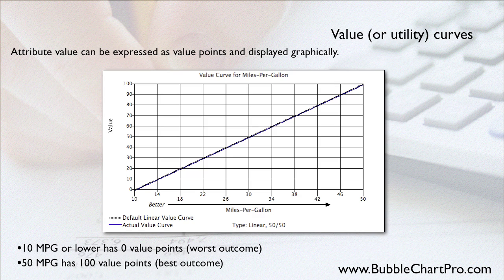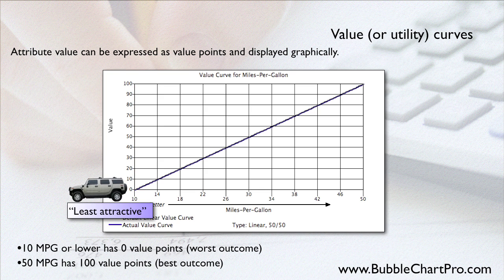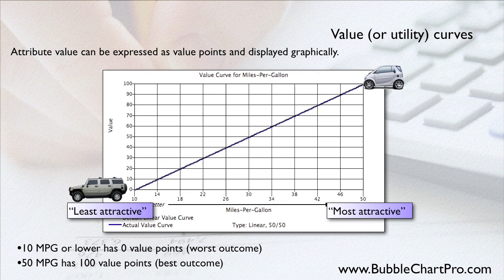So your attribute attractiveness can be expressed as value points and displayed graphically. In this chart, the attribute values are plotted on the horizontal or x-axis, and the corresponding value point score is plotted on the vertical or y-axis. The left side of the chart shows that cars that get less than 10 miles per gallon have no attractiveness, or zero value points. On the other end of the x-axis, cars that get 50 miles per gallon are the most attractive with 100 value points. Most cars would have gas mileage ratings between 10 and 50 miles per gallon, and would have value point scores between 0 and 100.